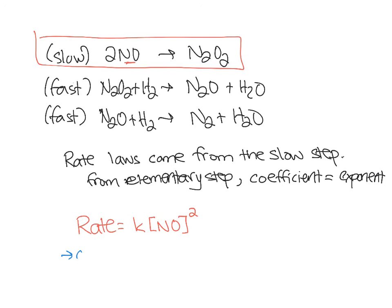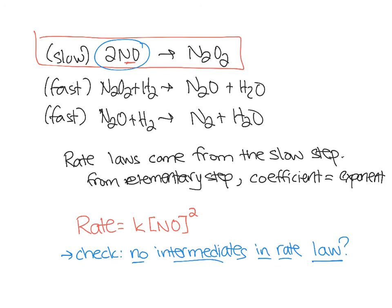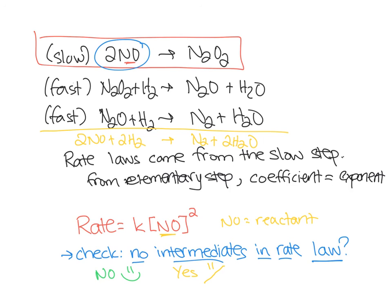Now I always have to check. What am I checking for? Are there any intermediates in the rate law that I just wrote? I look at this and I say, did any of these things in the slow step, were any of them intermediates? If the answer to that is no, we are happy because we are done. If the answer to that is yes, I've got a little bit more work to do. In this case, I look at NO and I remember that my overall reaction was 2NOs plus 2H2s makes N2 plus 2H2Os. And so my check is that NO equals a reactant. Reactants, catalysts, and even products can show up in a rate law. The only thing that can't show up is intermediates. When there are intermediates, we do more work.